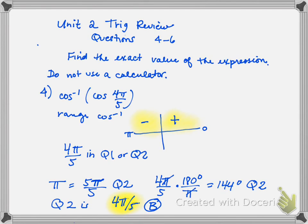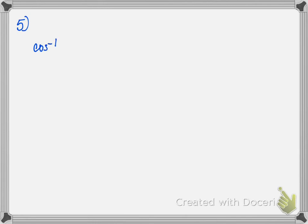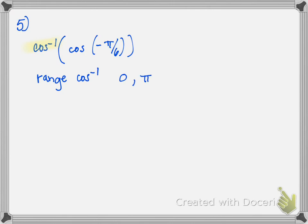Question number 5 asks us to find the inverse cosine of the cosine of negative π/6. Once again, because the inverse cosine is my outside function, I want to know what quadrant my answer should be in. The range of inverse cosine is 0 to π — that is quadrant 1 and quadrant 2. Negative π/6 is in quadrant 4, so that doesn't work.